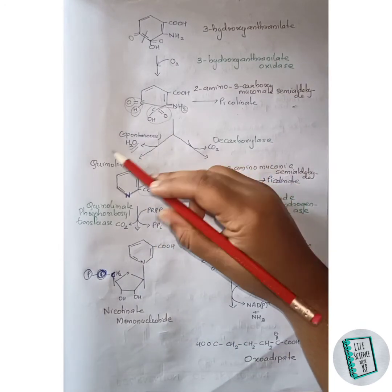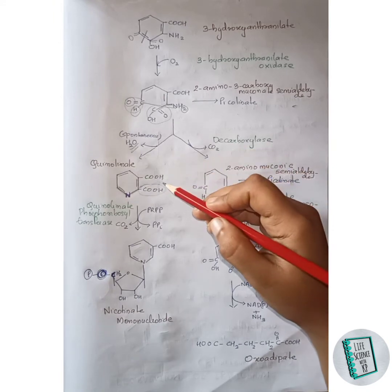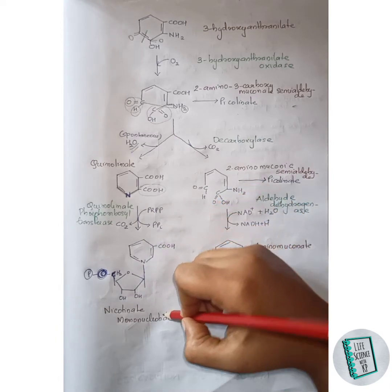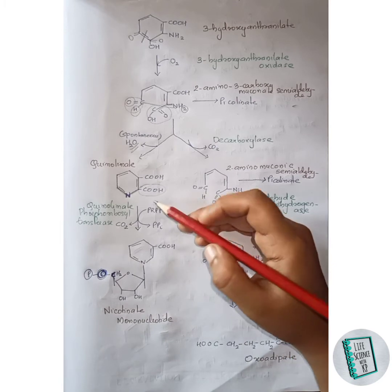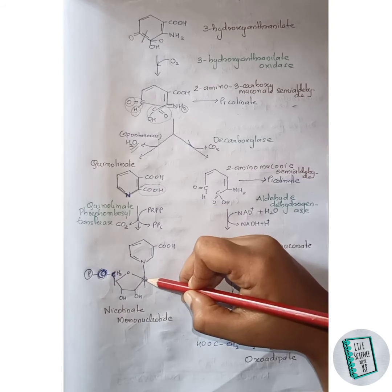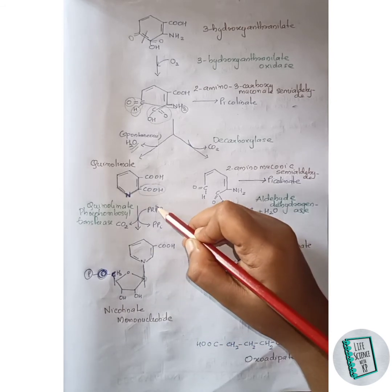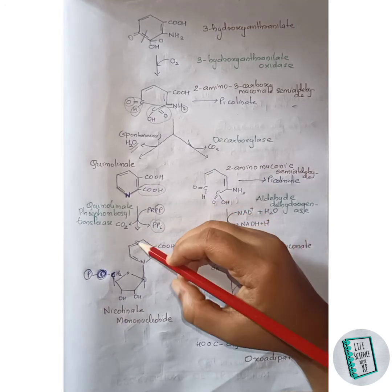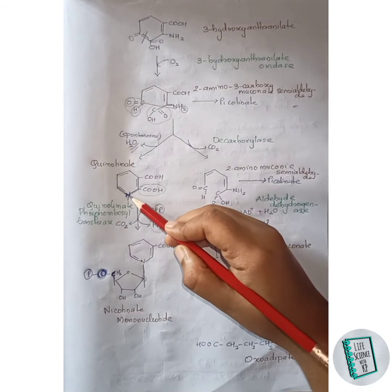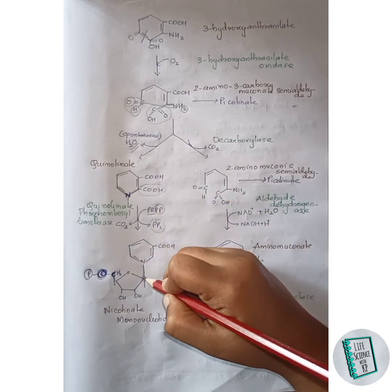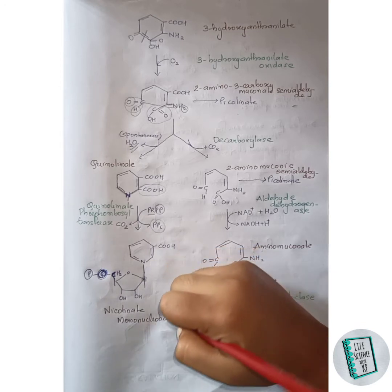Quinolinate then in the presence of quinolinate phosphoribosyl transferase forms nicotinate mononucleotide. The nitrogen of quinolinate attaches to a carbon of phosphoribosyl pyrophosphate, the pyrophosphate bond is released as PPi, and the nitrogen attaches to the phosphoribosyl group. Thus nicotinate mononucleotide is formed.